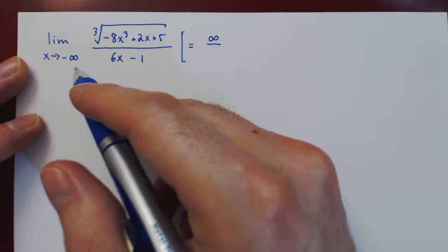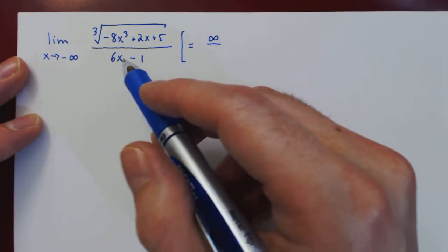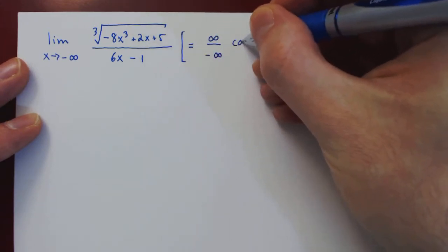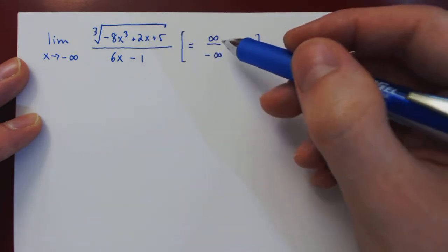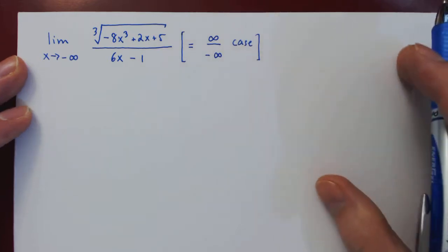As x goes to negative infinity on the denominator, the largest term is of course 6x, which also goes to negative infinity. So we have an indeterminate case as we have a ratio of two larger and larger quantities, one positive, the other negative.